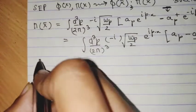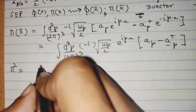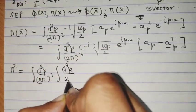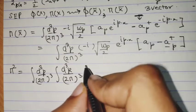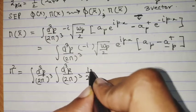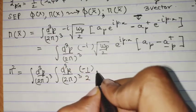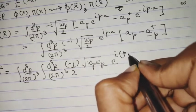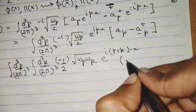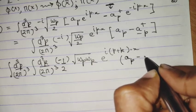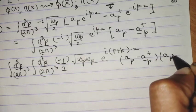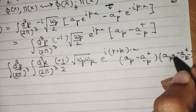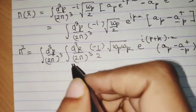Let's now calculate π². So π² = ∫d³p/(2π)³ ∫d³k/(2π)³, and then we will have a factor of −1/2 because i² = −1, times root(ω_p ω_k), times e^{i(p+k)·x}, times the operator product (a_p − a_{−p}†)(a_k − a_{−k}†). Everything is in three-vector notation here. This is π².